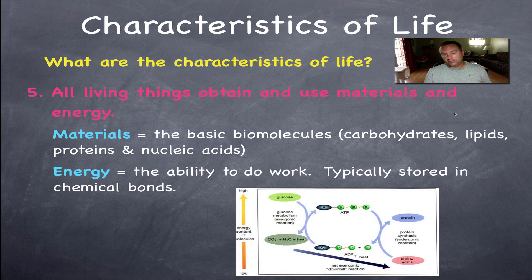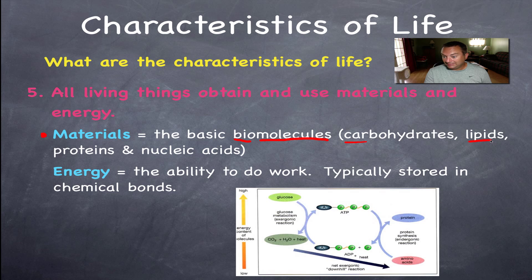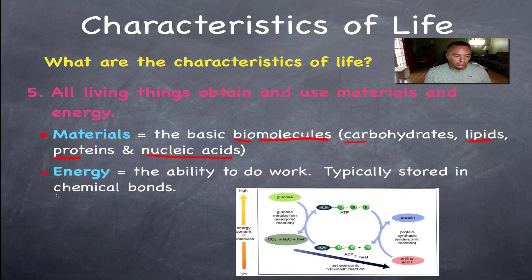All living things obtain and use materials and energy — basically, they go out and get food. The materials are the basic building blocks called biomolecules. The four types of biomolecules are carbohydrates, lipids (fats and oils), proteins, and nucleic acids — we'll cover those in chapter two. Energy is defined as the ability to do work and is typically stored in chemical bonds. Everything in a living thing is done through chemical reactions where bonds are broken and made.